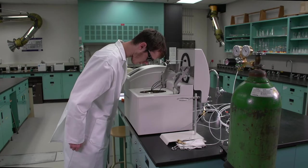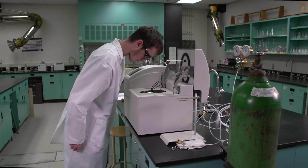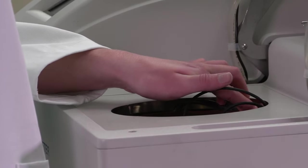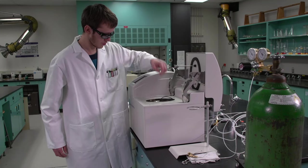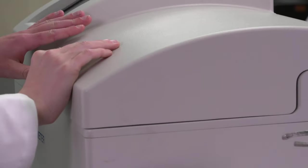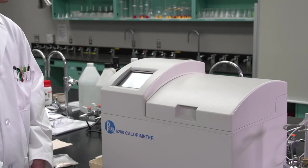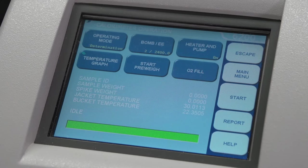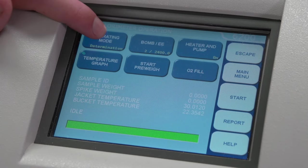Check to make sure that no bubbles are coming out of the bomb assembly. Ensure that the thermistor and stirrer do not contact the bucket, bomb or firing wires and close the calorimeter cover. On the calorimeter control panel, use the operating mode button to select standardization mode.